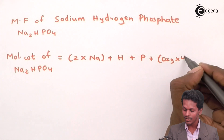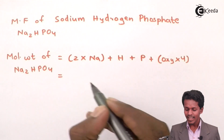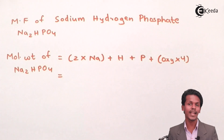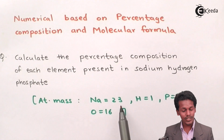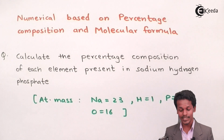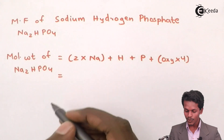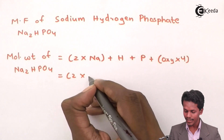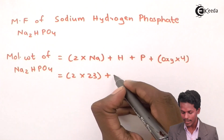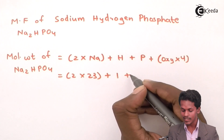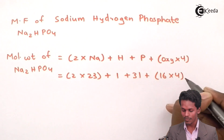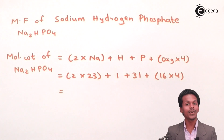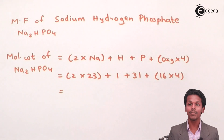We sum up all the atomic weights. The atomic masses are: Na = 23, H = 1, P = 31, and O = 16. So the calculation is: 2 × 23 (sodium) + 1 (hydrogen) + 31 (phosphorus) + 16 × 4 (oxygen, present four times). Let us calculate this sum to find the molecular weight of sodium hydrogen phosphate.